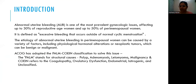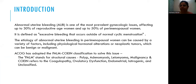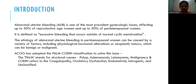Abnormal uterine bleeding is one of the most prevalent gynecological issues. Up to 30% of reproductive age women are affected because of it and up to 50% of perimenopausal women. It is defined as excessive bleeding that occurs outside of normal cyclic menstruation. ACOG has adopted the PALM-COEIN classification to solve the issue of identifying the various causes of abnormal uterine bleeding.